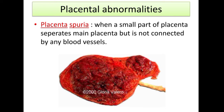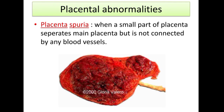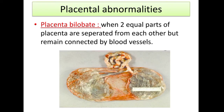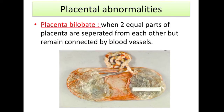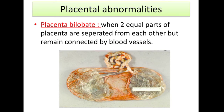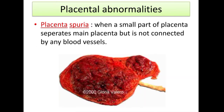Next is placenta spuria. When a small part of the placenta separates from the main placenta but is NOT connected by any blood vessels — this is called placenta spuria. The difference between succenturiata and spuria is that in succenturiata the lobe remains connected by blood vessels, whereas in spuria there is no blood vessel connection.